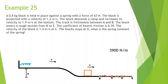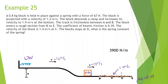Moving on to a similar question. A 0.8 kg block is held in place against the spring with a force of 67 N. The block is projected with a speed of 1.2 m/s. The block descends a ramp and increases its velocity to 1.9 m/s. The track is frictionless between A and B. The block enters a rough section from B to E. The coefficient of kinetic friction is 0.39. The velocity is 1.64 m/s at point C, and the block stops at point D. What is the spring constant of the spring?